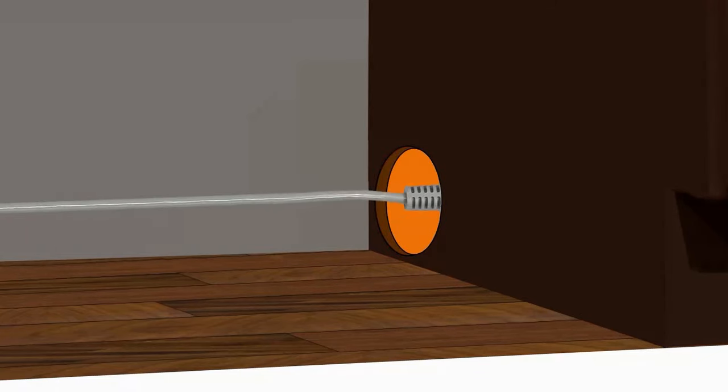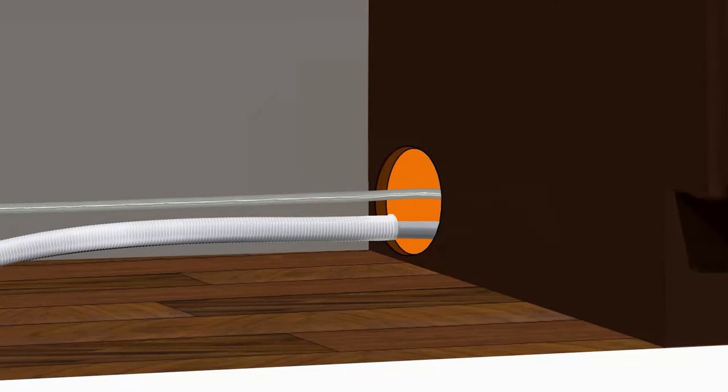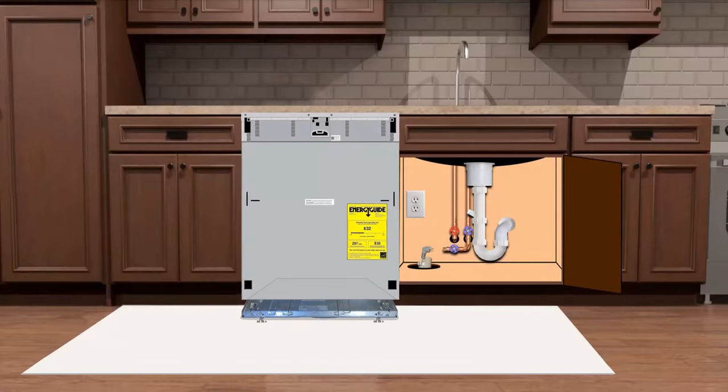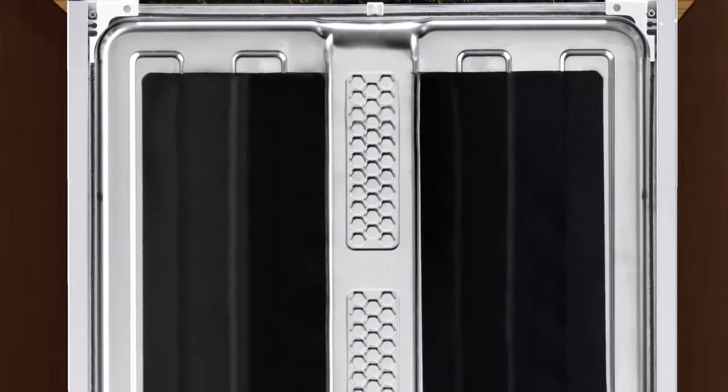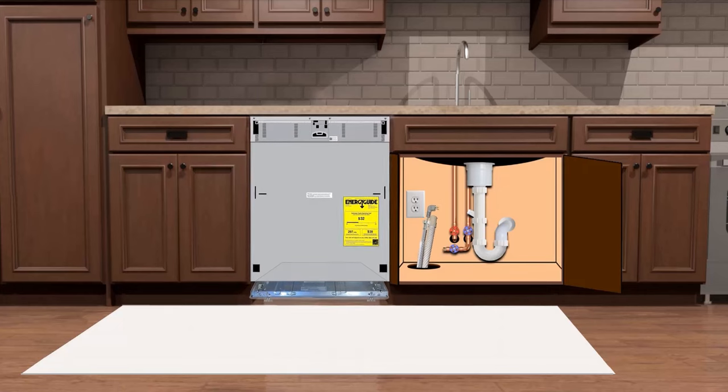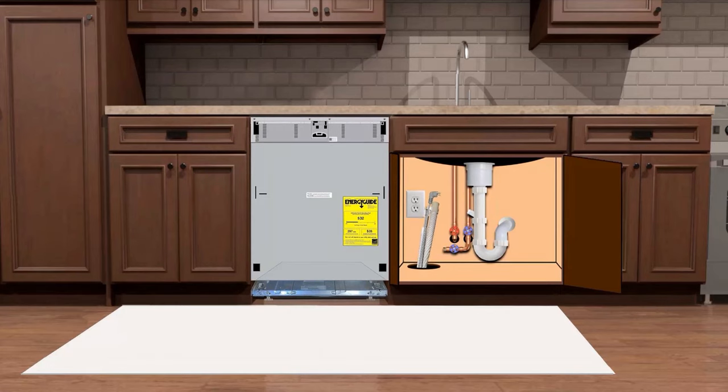Route the power cord, water and drain line through the base cabinet opening and up through the sink cabinet floor. Slowly push the dishwasher into the niche while also making sure you are picking up the slack in the lines from within the sink cabinet. Continue taking up the slack in the lines until the dishwasher is pushed all the way into the niche. This will help avoid kinking or pinching the lines as the dishwasher is slowly pushed back.